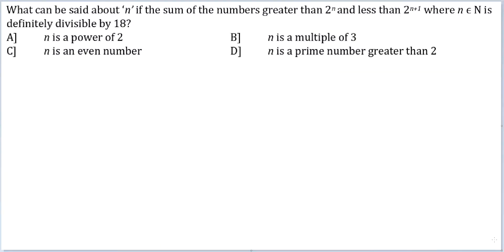Let's look at this question. What can be said about n if the sum of the numbers greater than 2^n and less than 2^(n+1), where n belongs to natural numbers, is definitely divisible by 18?